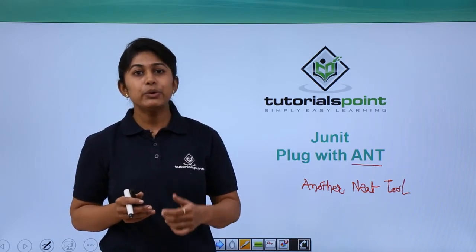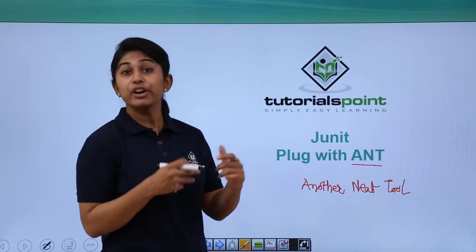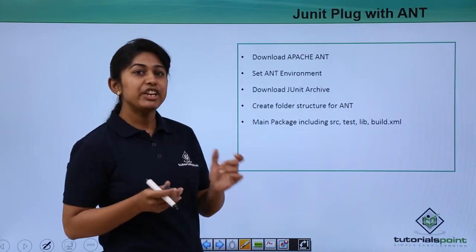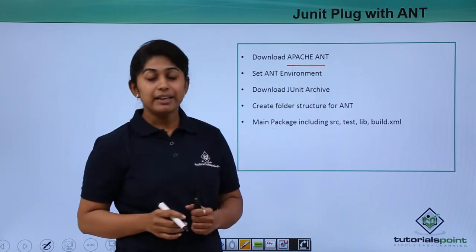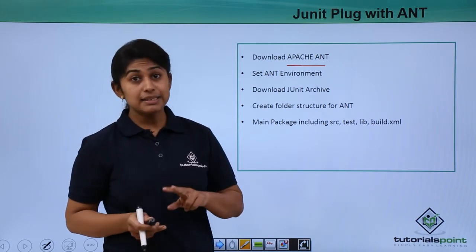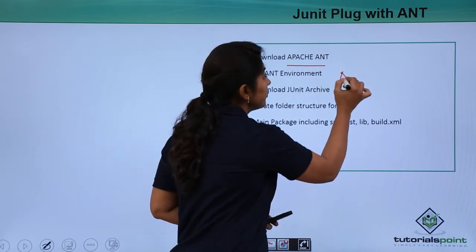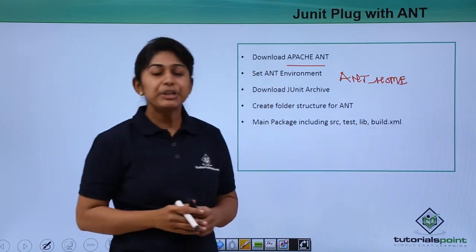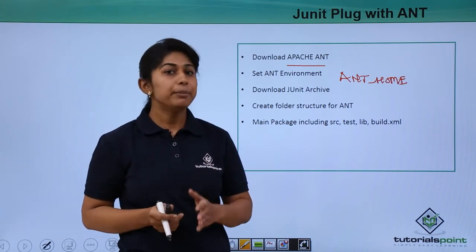The very first thing we need to know is how the environment setup is done to plug in the JUnit framework with ANT software. The first step is to download Apache ANT — go to the official website of Apache and download ANT. The next thing is to set the environment for ANT by setting the ANT_HOME variable and setting the path for its bin folder in the environment variables of your computer system.